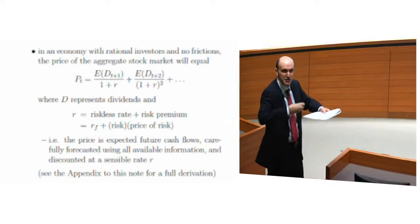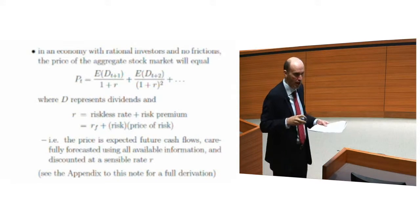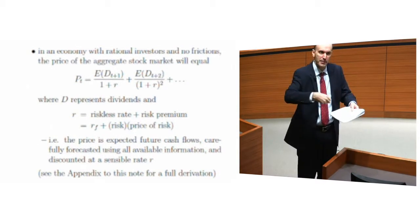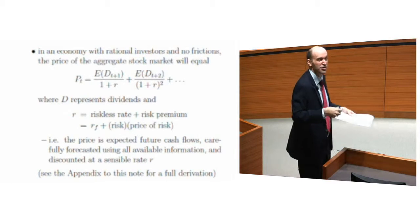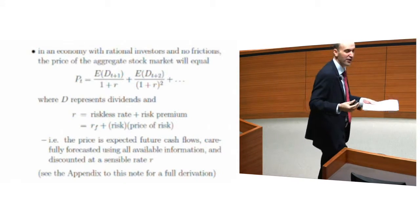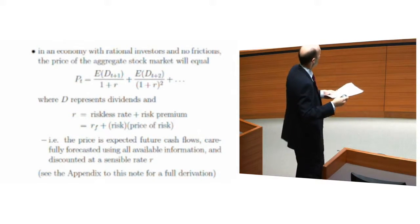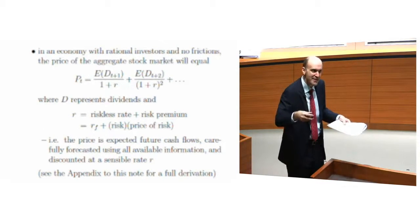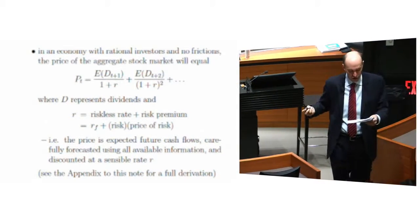All it's really saying is: if I expect companies to be very profitable in the future — that's the numerator — then the stock market should have a high value today. If I expect high interest rates RF in the future, the stock market should have a low value because there's a competing asset that is attractive. If I expect high risk in the future, the stock market should have a low value because I don't like risk. And if I'm very risk averse, the stock market should have a low value. So by staring at the right-hand side, you can see that in a fully rational economy there are four possible reasons for the stock market to go up or down.